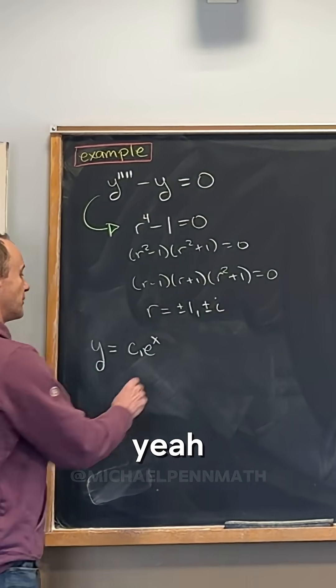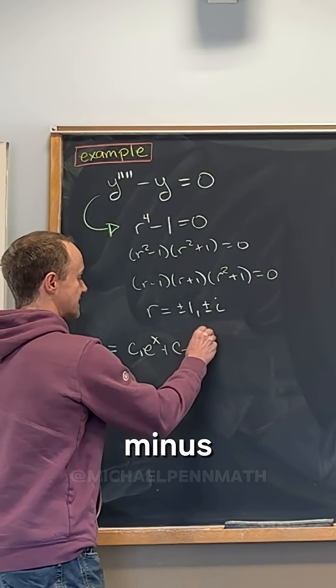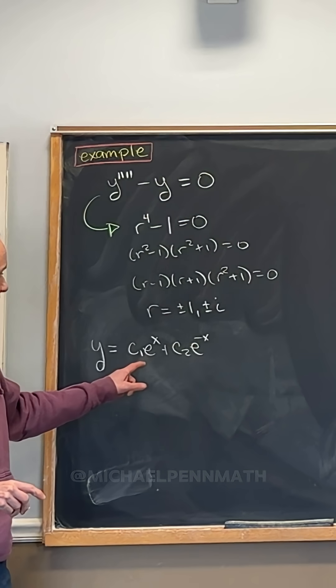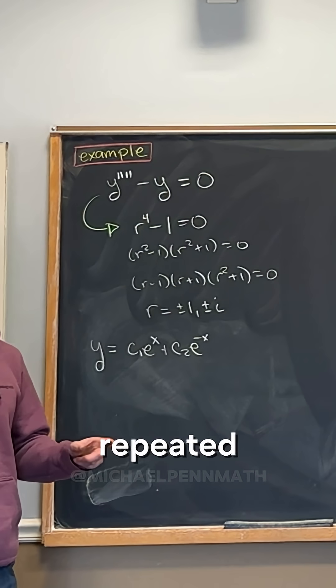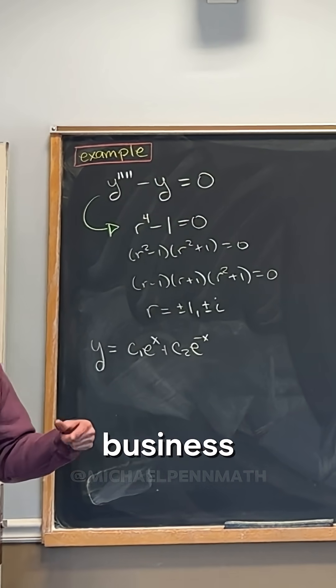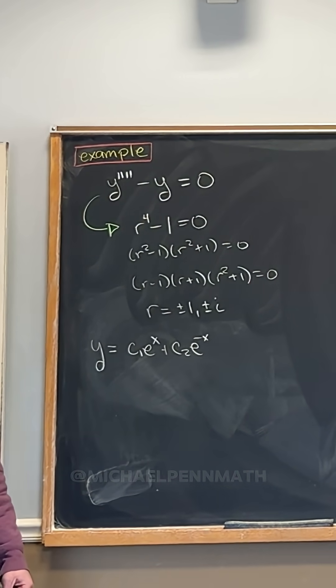Now c1 e to the x, yeah, plus c2 e to the minus x. So the plus one root gives us the e to the x, the minus one root gives us the e to the minus x. And we don't have any repeated roots here, so there's no business with multiplying by the x to boost it.